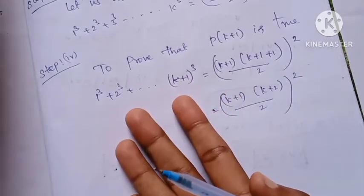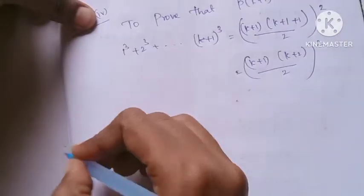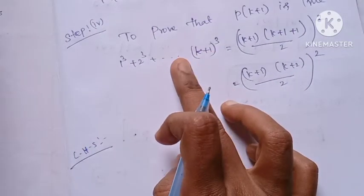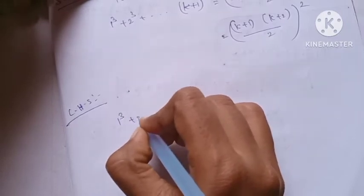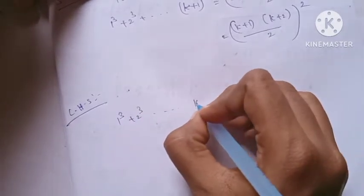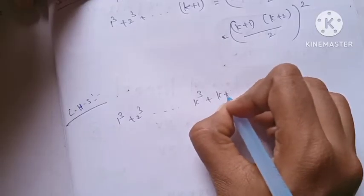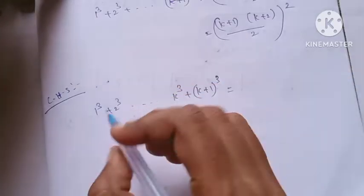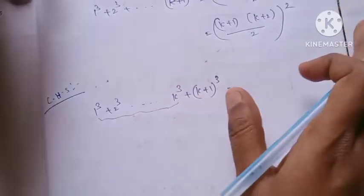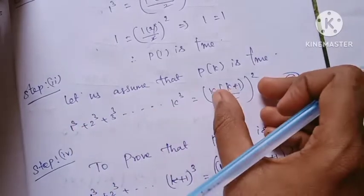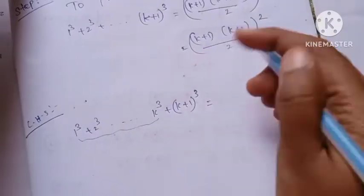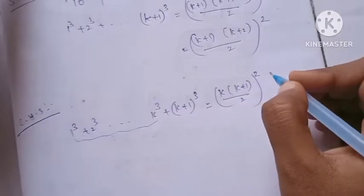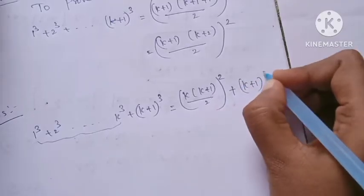We work on the LHS and prove it equals the RHS. LHS is 1 cube plus 2 cube, up to k cube, plus (k plus 1) cube. Using equation 1, we substitute: k into (k plus 1) by 2, the whole square, plus (k plus 1) the whole cube.